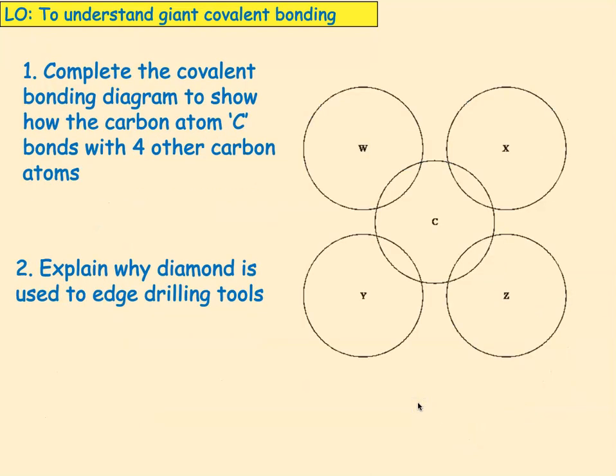I want you to pause the video now. Complete the covalent bonding diagram to show how a carbon atom bonds with four other carbon atoms. As well as that, explain why diamond is used to edge drilling tools. Pause the video now and come back when you've answered the questions.